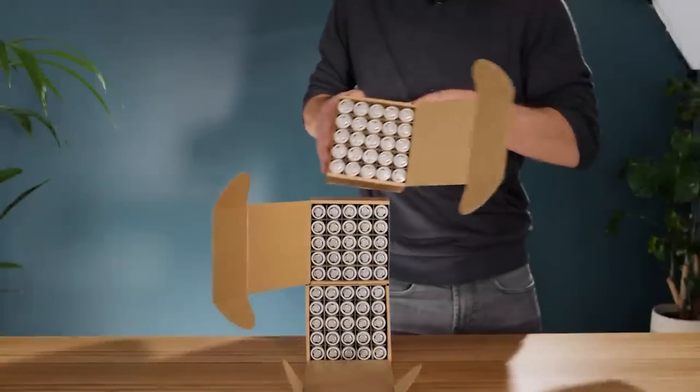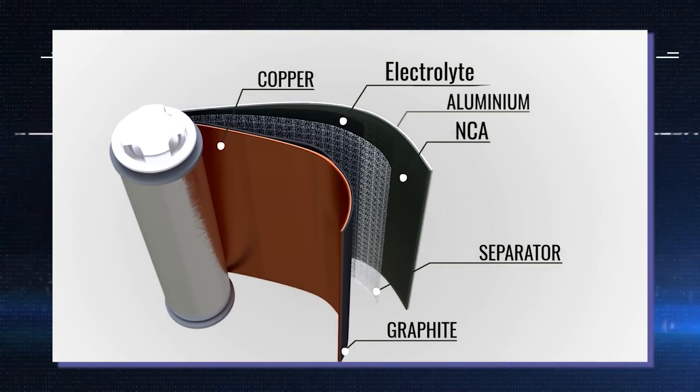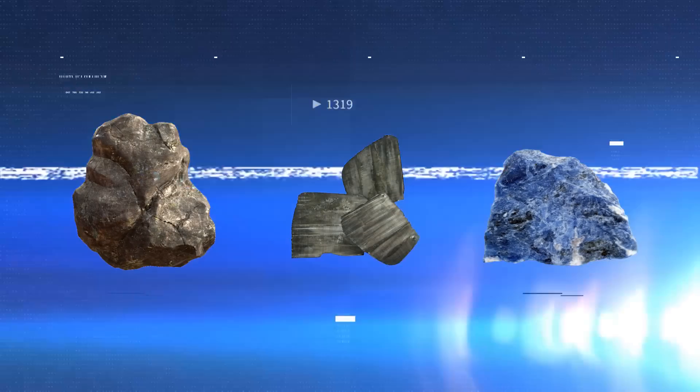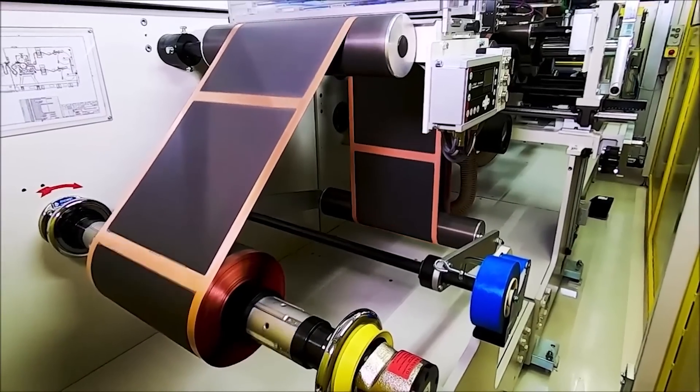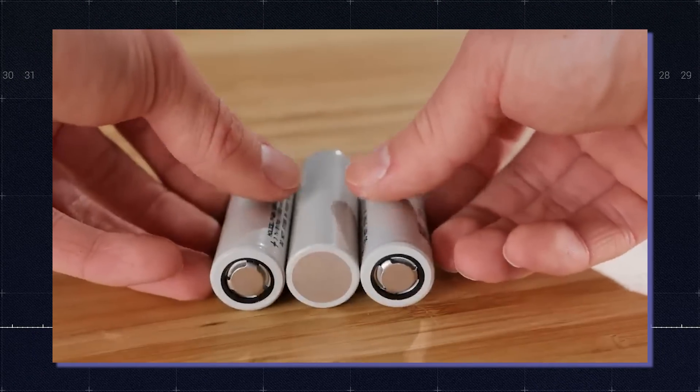However, perhaps the biggest drawback of EV lithium batteries is the cost. These batteries are expensive because of the materials used, especially in the cathode. Cobalt, nickel, and so forth cost a lot, and the supply chain fluctuates, leading to volatile prices. Battery prices are indeed falling, but they are still expensive. Enter the solid-state battery.